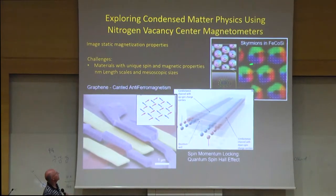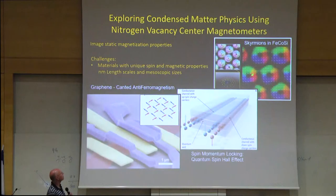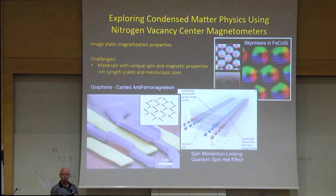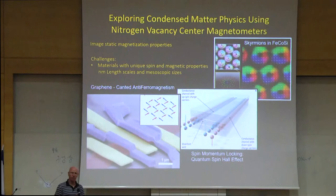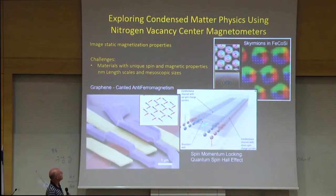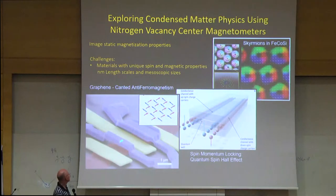Here is another example of ground state order — skirmionic order — where the system arranges itself not in a ferromagnetic or antiferromagnetic state, but in an intermediate configuration. On the atomic scale, spins are aligned so the system is locally ferromagnetic, but on a larger scale the system is antiferromagnetic, with spins pointing in opposite directions. The challenge associated with exploring this physics mostly comes from the size scales at which these systems appear.